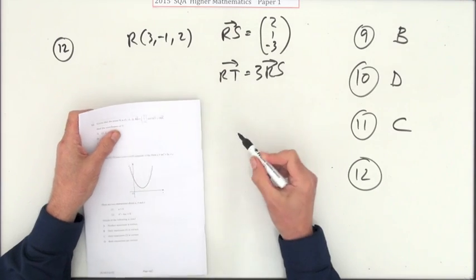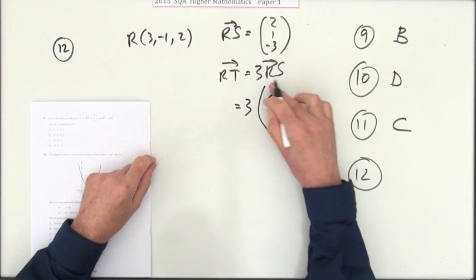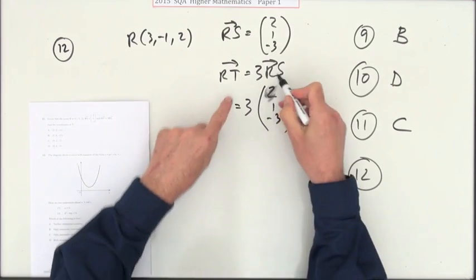So what is RT? It's 3 times this one. It's 3 times (2, 1, -3). 3 times RS. So that's going to be: 3 2s are 6, 3 1s are 3, 3 negative 3s are negative 9.